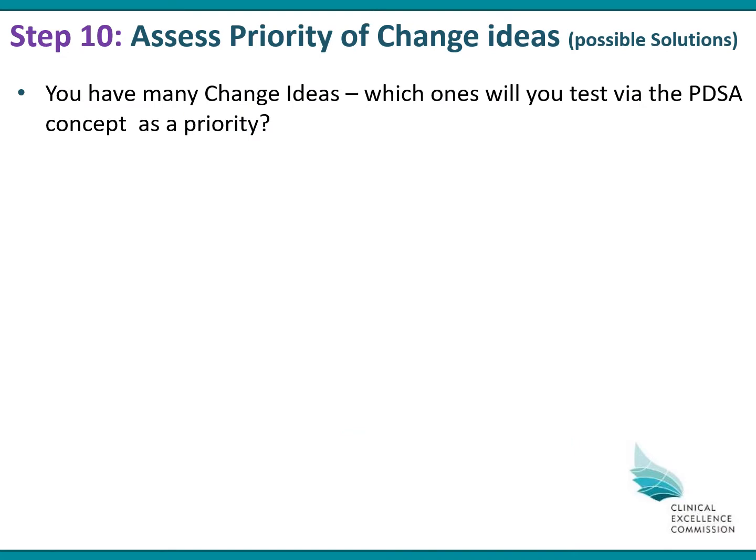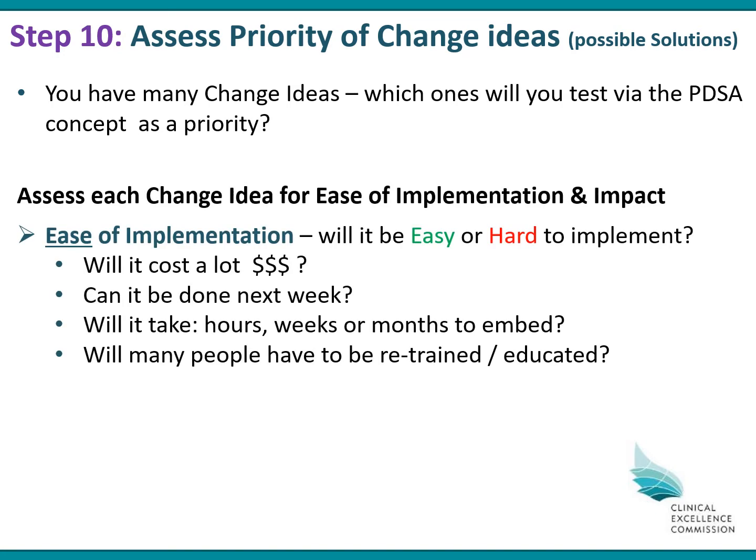Step number 10 is where you assess the priority of your change ideas. When you look at your driver diagram, you've got many change ideas and you need to work out which ones you'll test or implement first as a priority. There are two stages to this. You look at the ease of implementation as the first stage and work out whether it's going to be easy or hard to implement — whether it will cost a lot of money, can it be done next week, or will it take hours, weeks or months to embed, and will many people have to be retrained or educated.